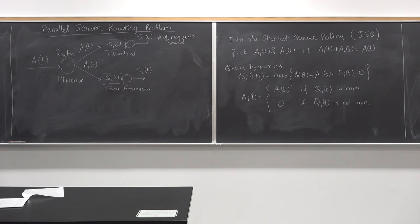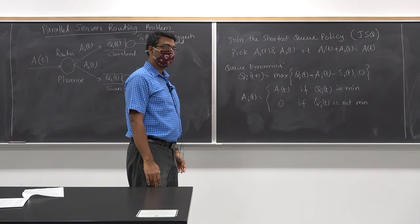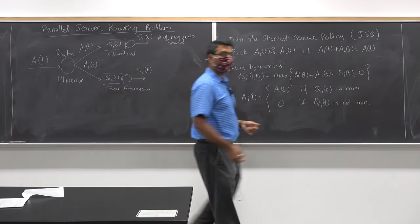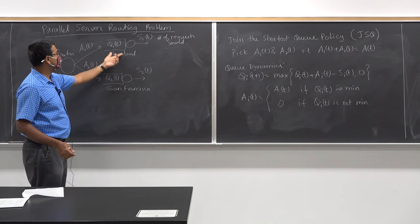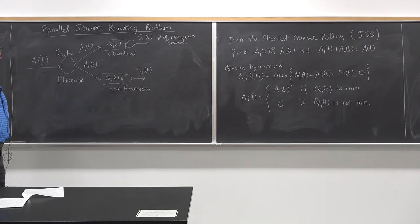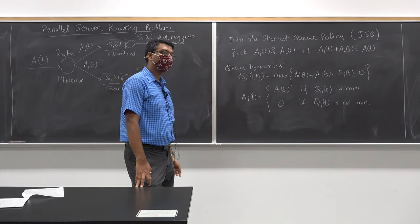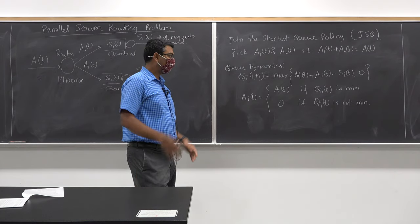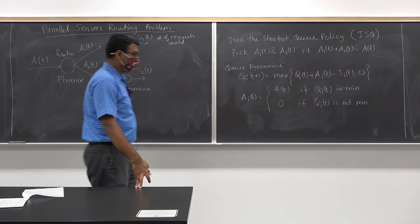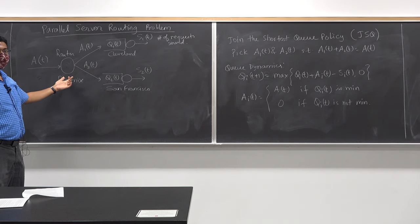The router only knows the queue length q_i(t) — it keeps track of how many requests are sitting at each server. The router doesn't know the length or complexity of each individual request because figuring that out within microseconds is the problem. So people over-provision: they maintain a lot of capacity at various places so they don't have to optimize, because the latency is so low due to over-provisioning.